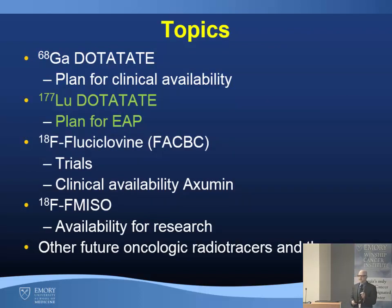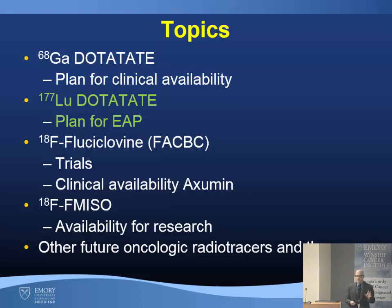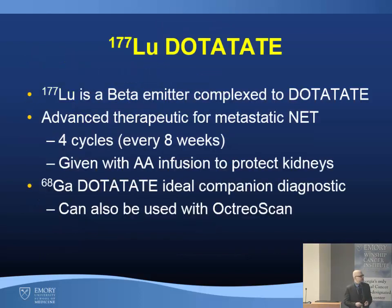Moving on to therapeutics: not only can you label dotatate with gallium-68, a PET radiotracer to see where tumors are, but you can also use that same dotatate radiolabeled with a beta emitter such as lutetium-177 to perform therapy. This is similar to the I-123 MIBG scan concept — you see if there's uptake and know you can treat with I-131 MIBG. It's a theranostics concept.